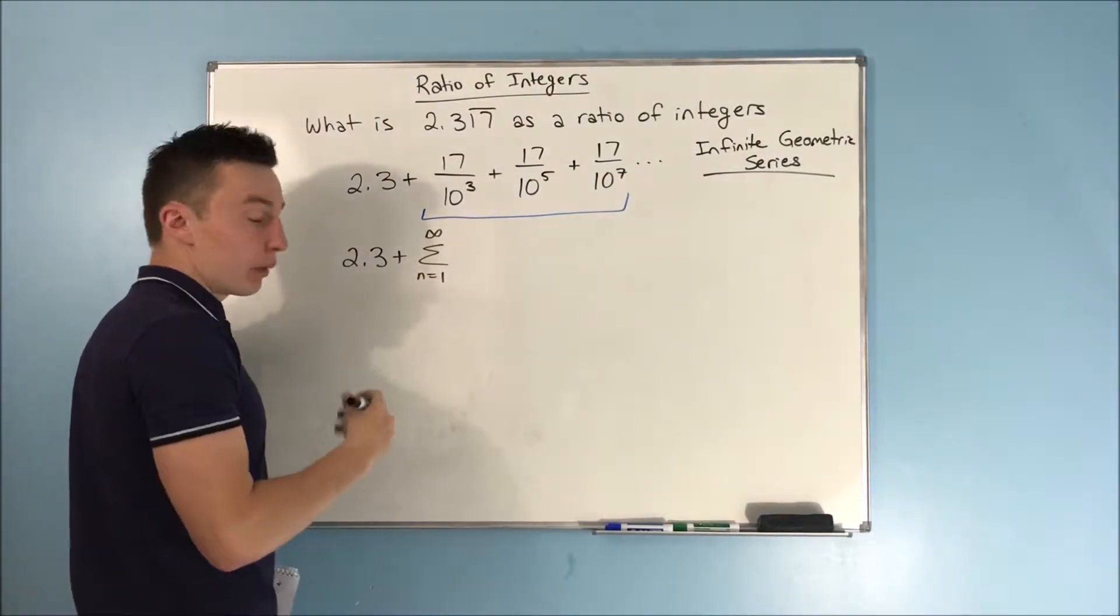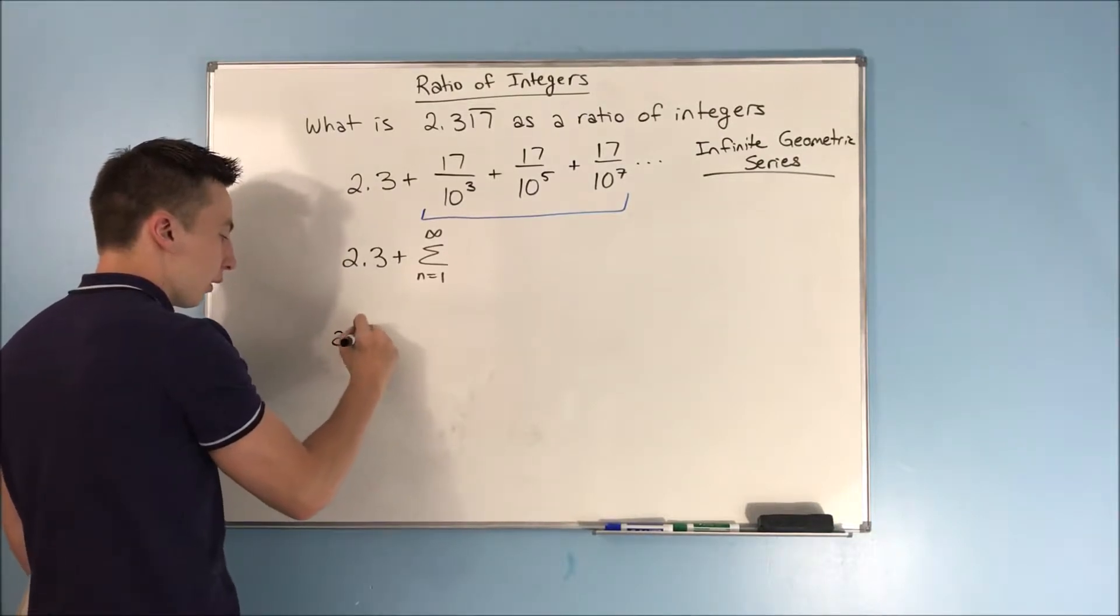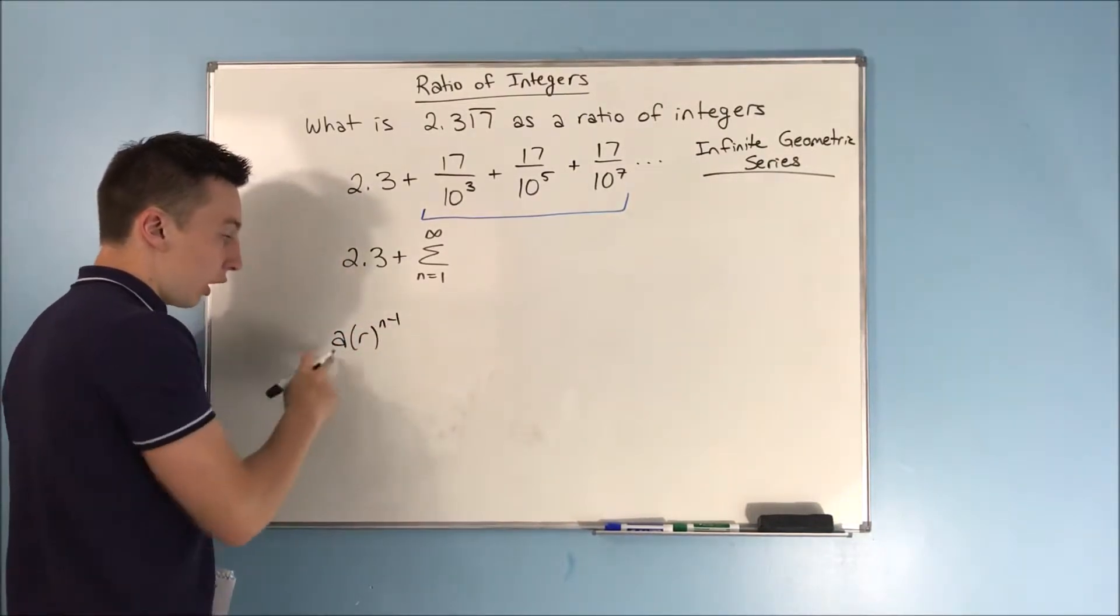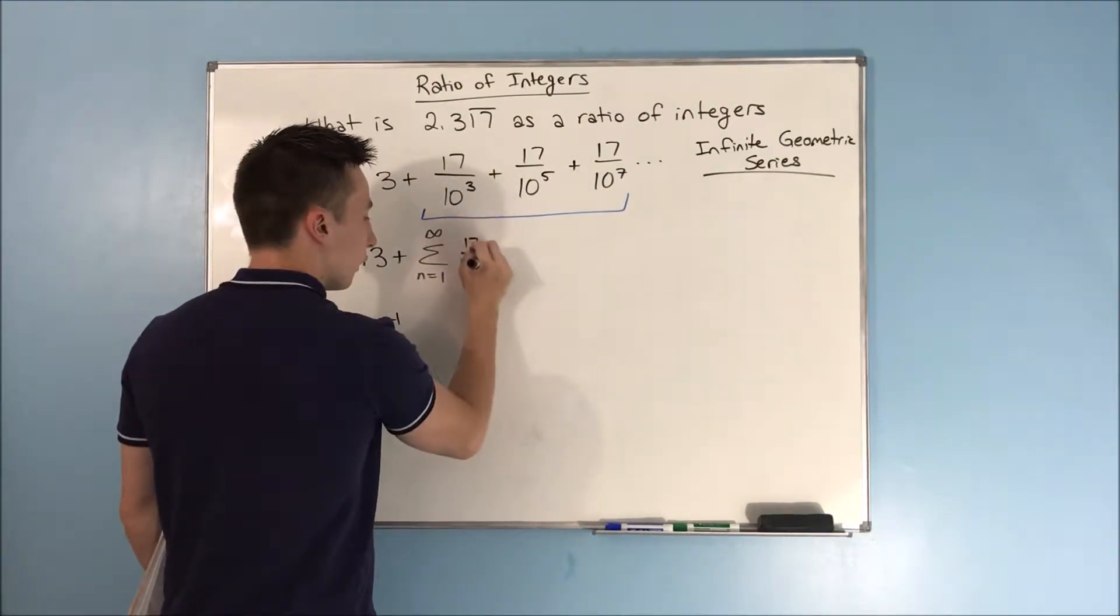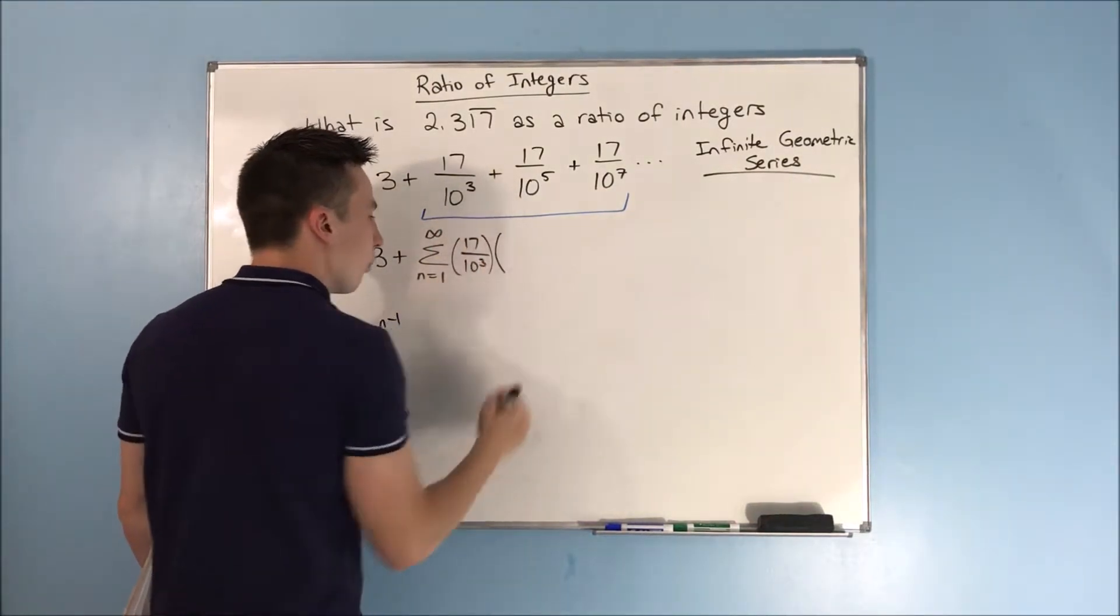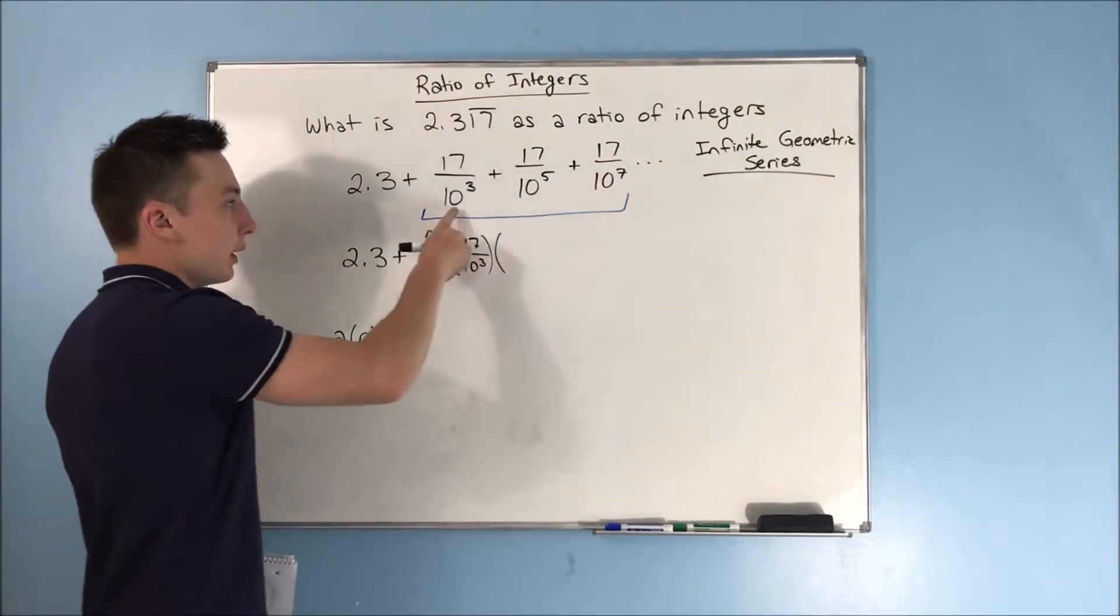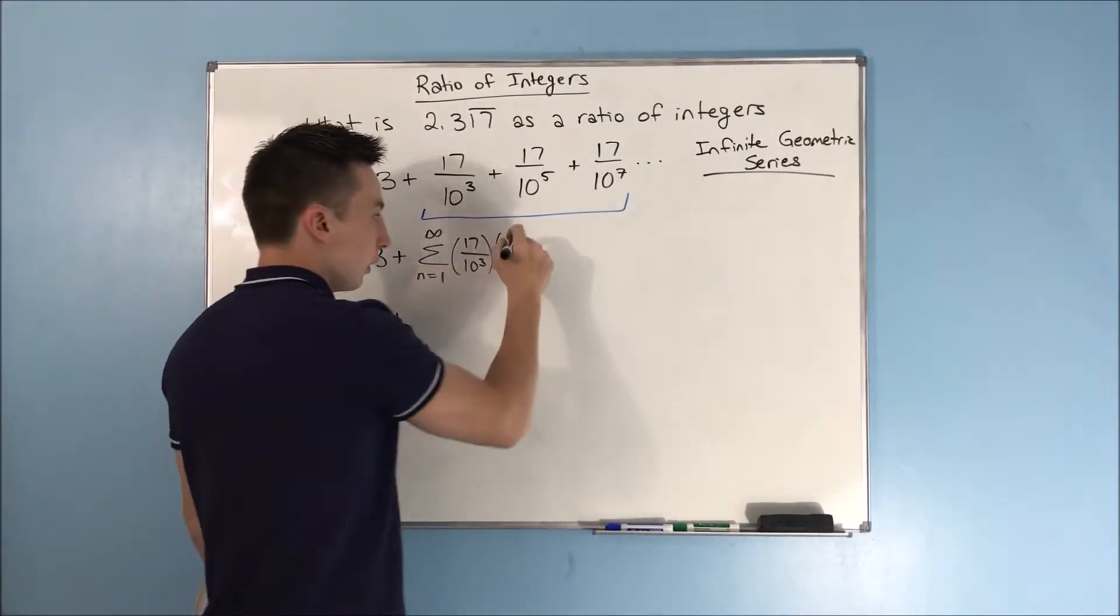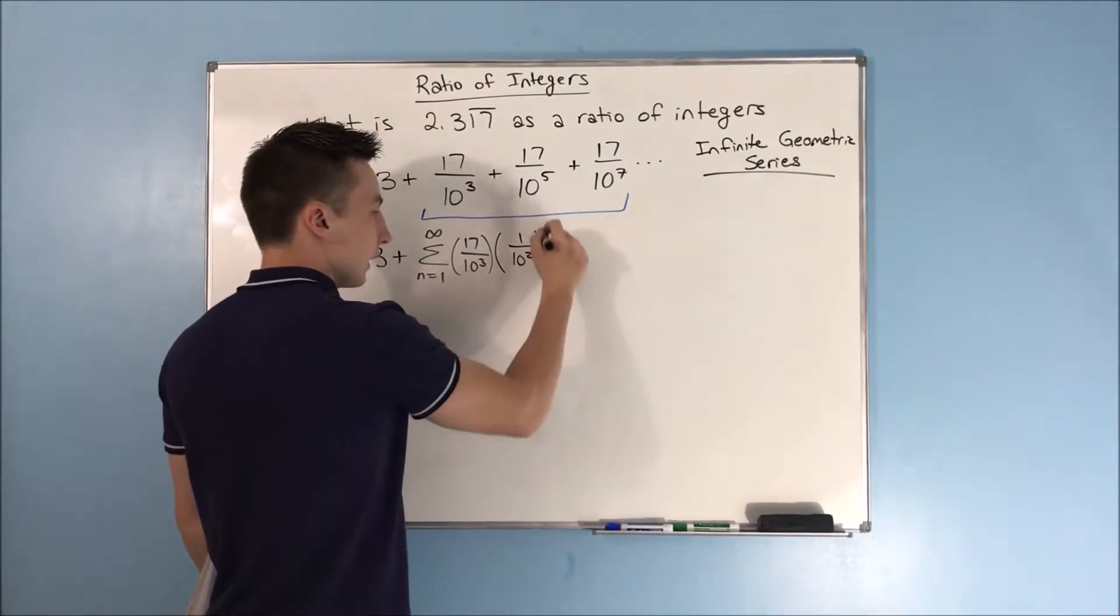What's our first term? Remember we're trying to have the form a times r^(n-1). Our first term is 17 over 10³, and what are we multiplying by each time? Well, to get from here to here we multiply by 1 over 10², and that's the (n-1) power.